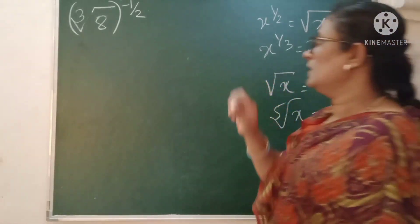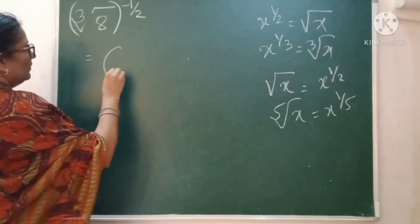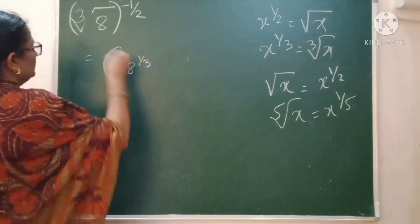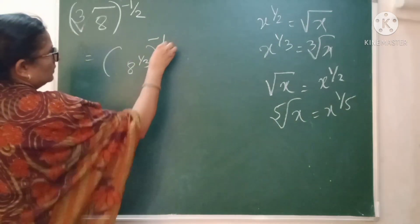So now, in the same way, I am going to proceed this one. This can be written as 8 raise to 1 by 3. First, we simplify this one. Raised to minus 1 by 2 as it is.